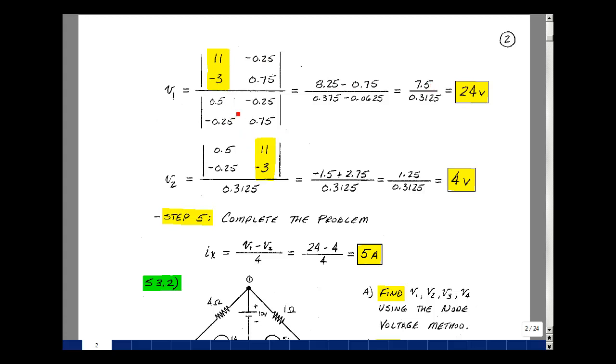And for the denominator, this times this is 0.375, and then minus the product of these two, which is going to also be negative, but it's 0.0625. That gives me 0.3125. That ratio is 24.